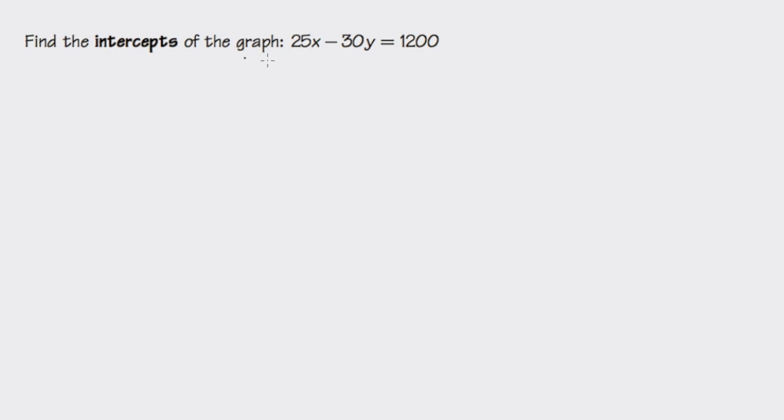We are going to find the intercepts of the graph, 25x minus 30y equals 1200. As we can see, the equation is asking us to find the intercepts.